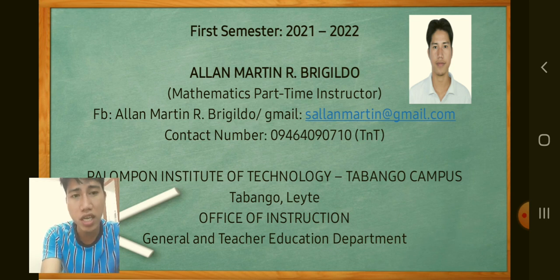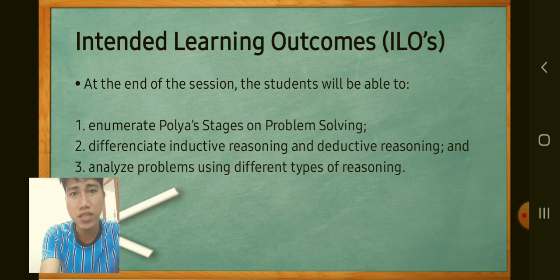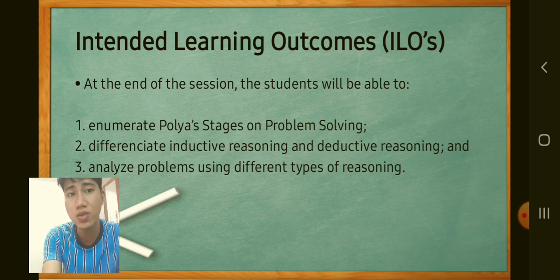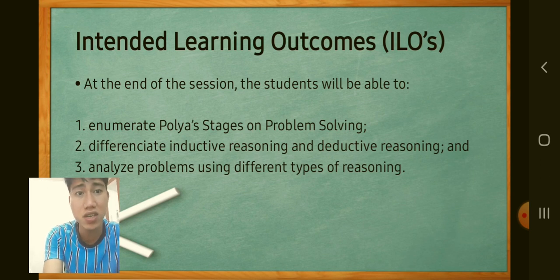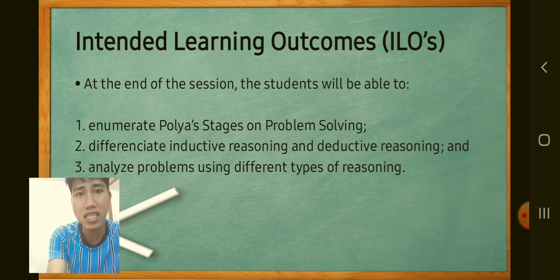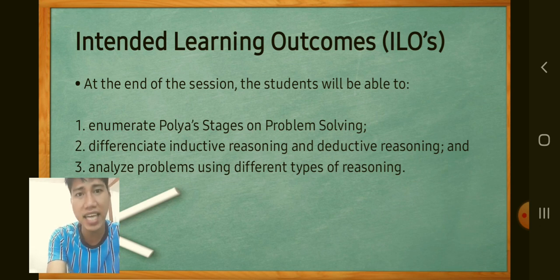Here are the intended learning outcomes for this session. At the end of the session, students will be able to: first, enumerate Polya's stages on problem solving; second, differentiate inductive and deductive reasoning; and third, analyze problems using different types of reasoning.